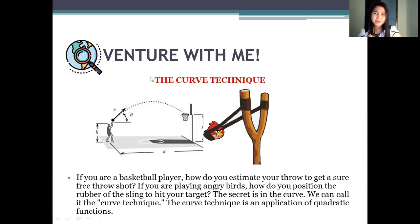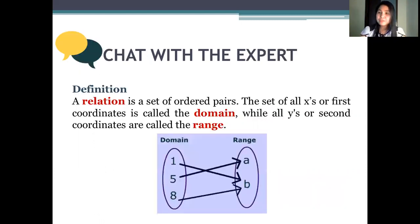But before that, let's have a very brief review. What is a function? Now, we first define a relation because a function is a relation. A relation is a set of ordered pairs. Just like we have the word relationship, in a relationship, it comes with a pair, most likely. Now, the set of all X, we call this the domain. And for all the Y, we call it the range. Or for some, we call it the ordinate.